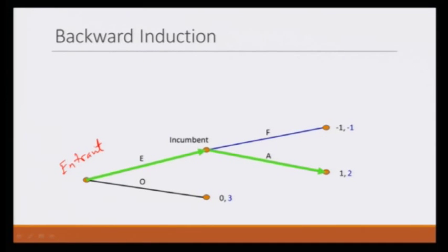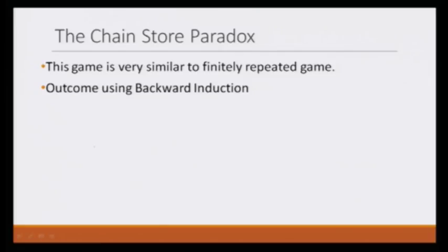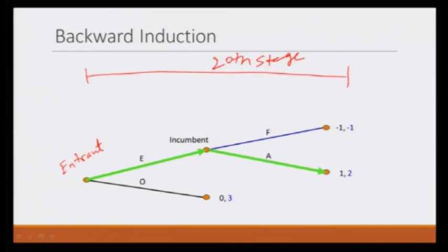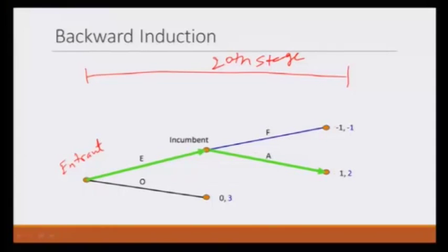How should we solve this game? As we have already discussed, it is very similar to a finitely repeated game, and we should be able to use backward induction. The game tree at the 20th stage would become very large and cumbersome, because at each stage we must draw the entry game again — just in two stages we get four sub-games. But at the 20th stage, all sub-games would look like this entry game, so it is very easy to solve.